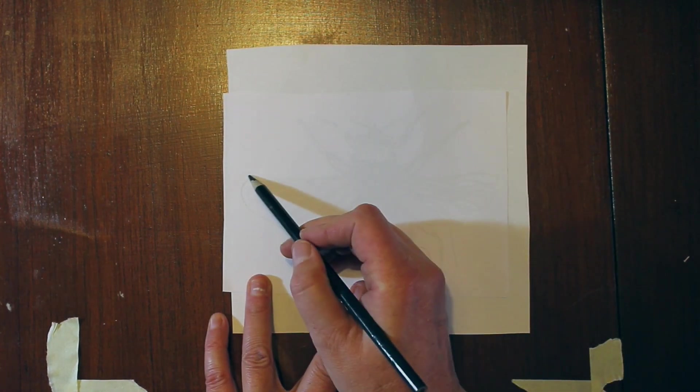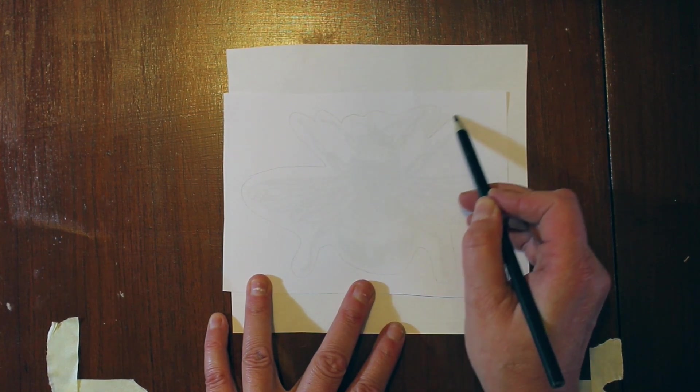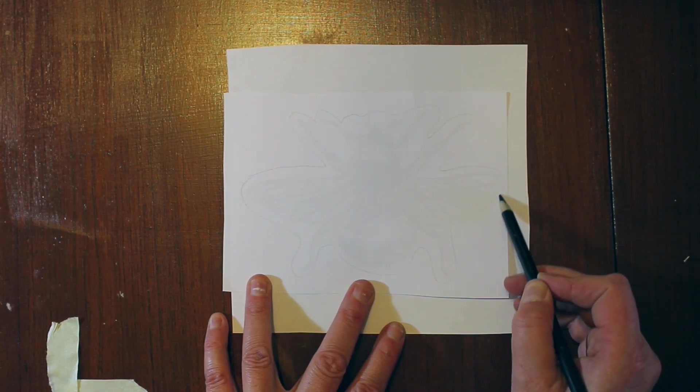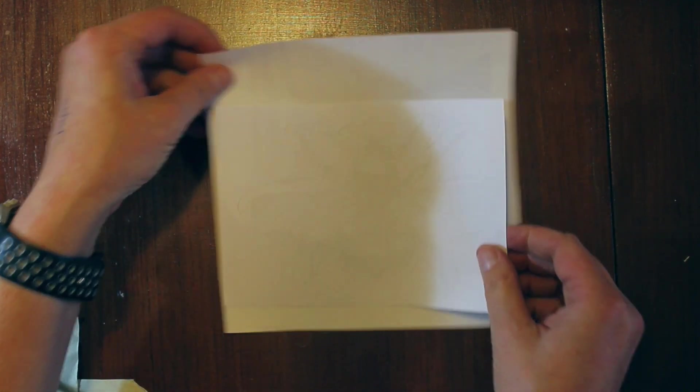I'm just roughly marking out the edge of the image so I know where it is because I'm looking at the opposite side of the paper.